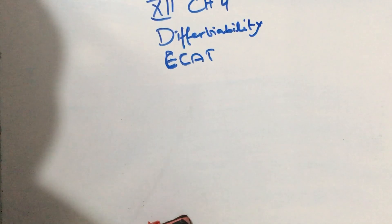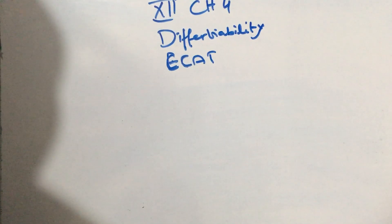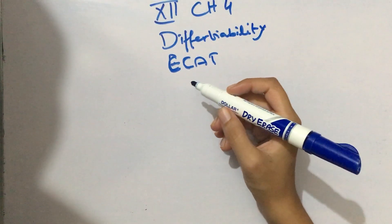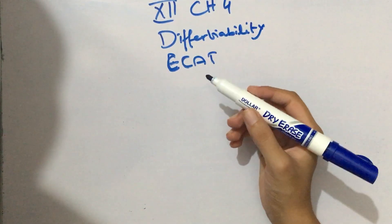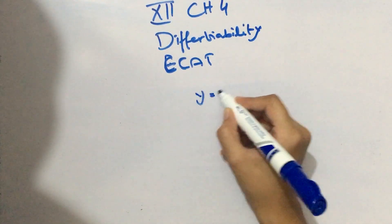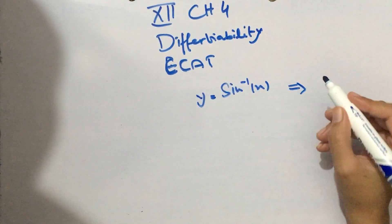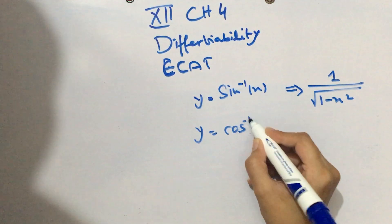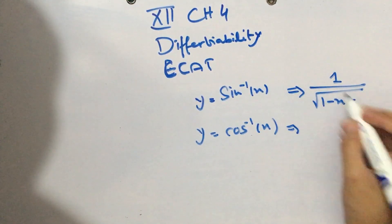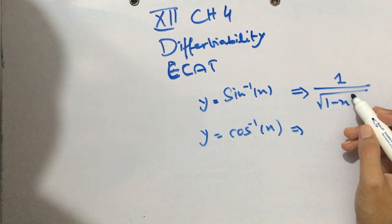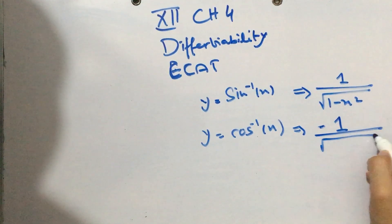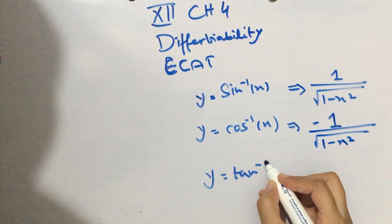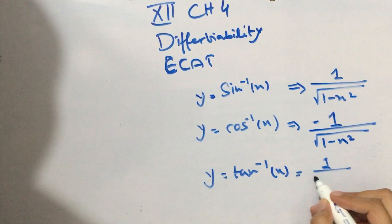We also have inverse trigonometric functions. If y = sin⁻¹(x), the derivative is 1 / √(1 − x²). For cos⁻¹(x), the formula is the same but with a negative sign: −1 / √(1 − x²). For tan⁻¹(x), the derivative is 1 / (1 + x²).